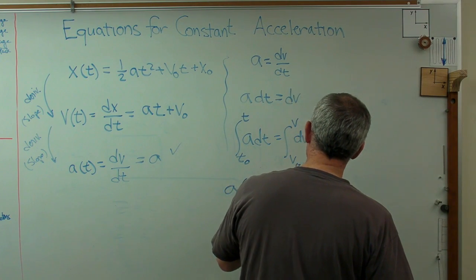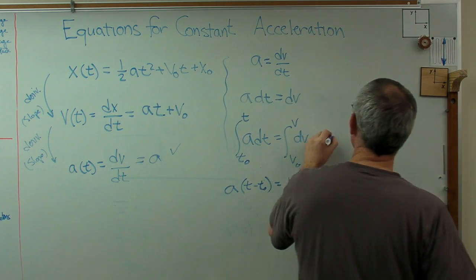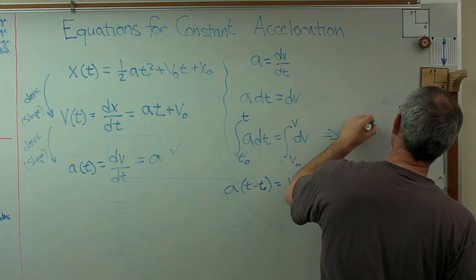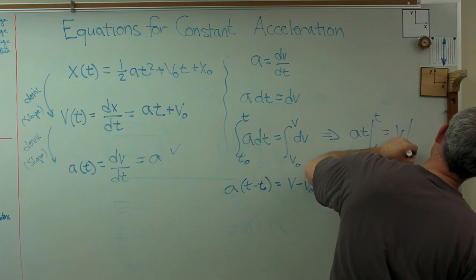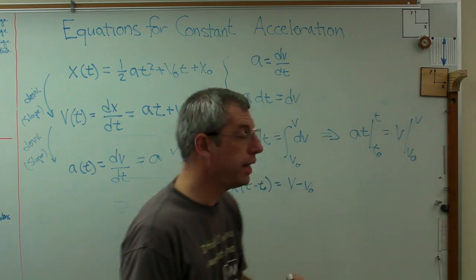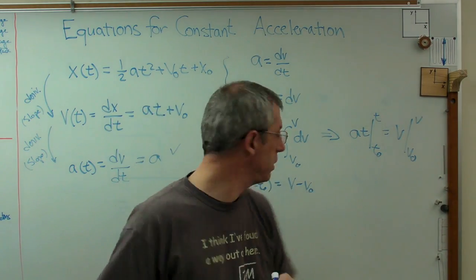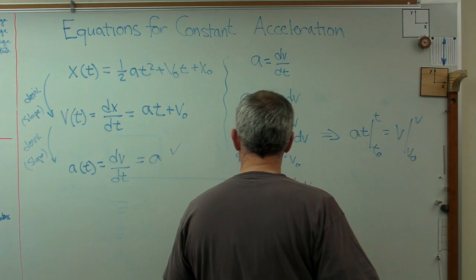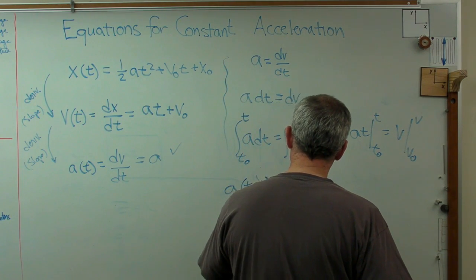That's going to be v minus v0. Because the way I'm going to do this, let me write this out a little more carefully. That's going to be at evaluated from t to t0 equals v evaluated from v to v0. So I went from there to there to there. Well, let's say that t0 is 0.